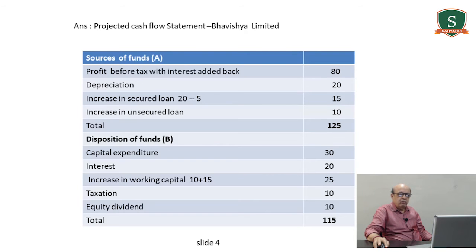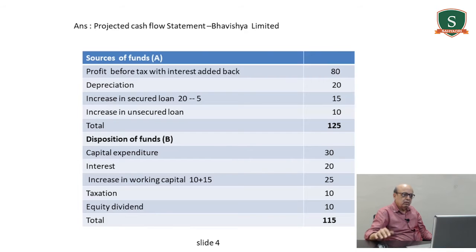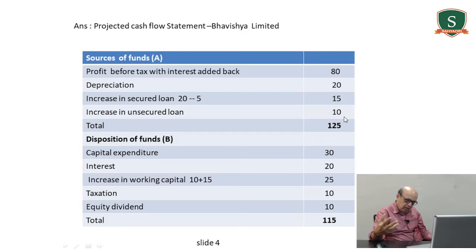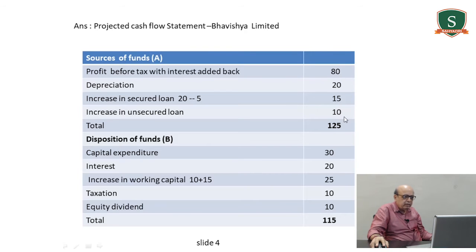Increase in secured loan: you raised 20 from financial institutions and repaid 5 of old loan, so net is 15. Increase in unsecured loan is 10 — received from third parties, financial institutions, or others without giving security. Total sources of funds comes to 125.